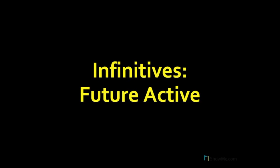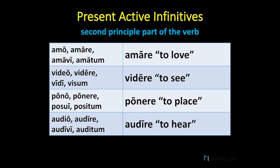In this video, we will discuss the formation and translation of the future active infinitive. Let's first remind ourselves a little bit about infinitives by using the present active infinitive. The present active infinitive comes from the second principal part of the verb. From amo amare, we have amare.